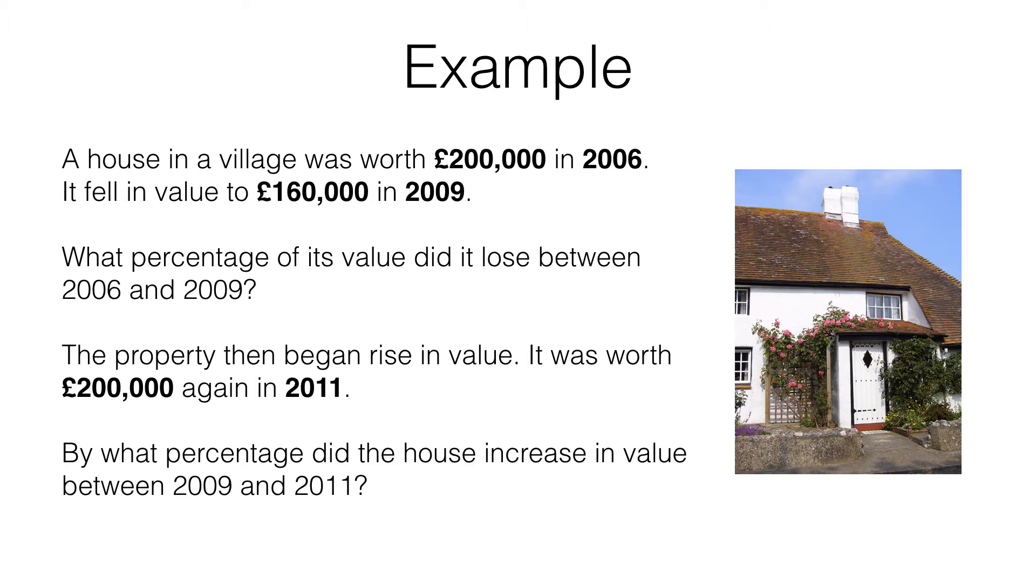Let's take a quick look at this question. A house in a village was worth £200,000 in 2006. It fell in value to £160,000 in 2009. We then have to work out what percentage of its value it lost between 2006 and 2009. After that the property began to rise in value. It was worth £200,000 again in 2011, and then we have to work out by what percentage the house increased in value between 2009 and 2011.